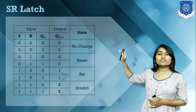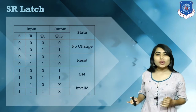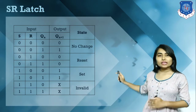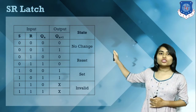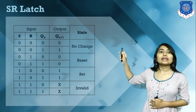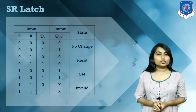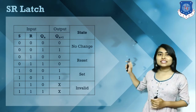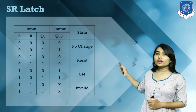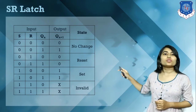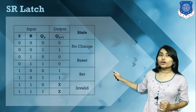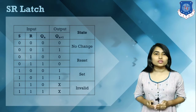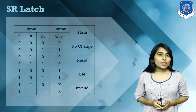Whenever S and R equal 0,0, Qn and Qn+1 are equal — this is the no-change state. For S=0, R=1, we have a reset condition, so Qn+1 equals 0 regardless of the past output, because R=1. For S=1, R=0, we have a set condition — Qn+1 equals 1 regardless of past output. For S=1, R=1 we have an invalid state, represented as a don't-care condition.